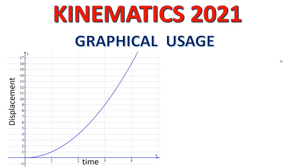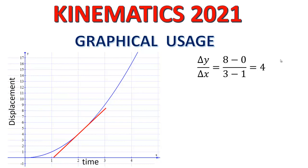Now I make a tangent on this graph at the point t equals 2 seconds — this red line. I find delta y and delta x: from the y-axis it is 8 minus 0, and from the x-axis it is 3 minus 1, giving delta y over delta x equal to 4. This is delta displacement divided by delta time, so the velocity at that point is 4 meters per second at time t equals 2 seconds. This is how we find velocity from a displacement versus time graph.